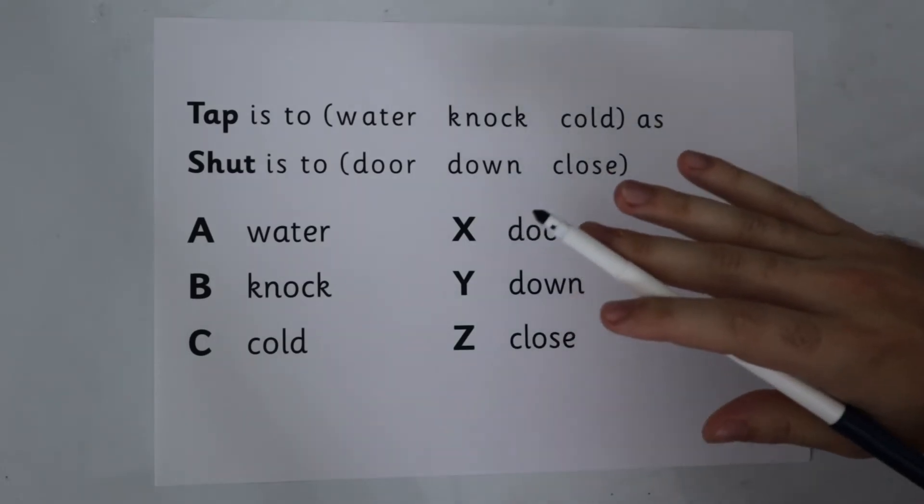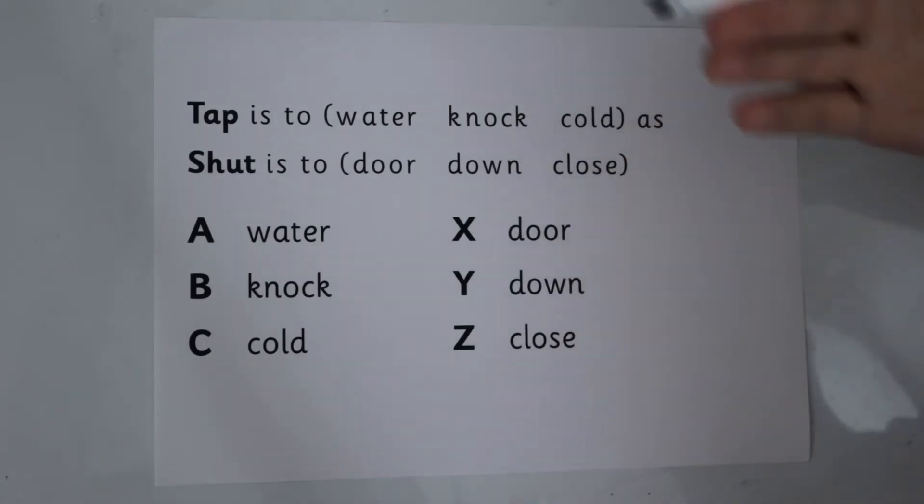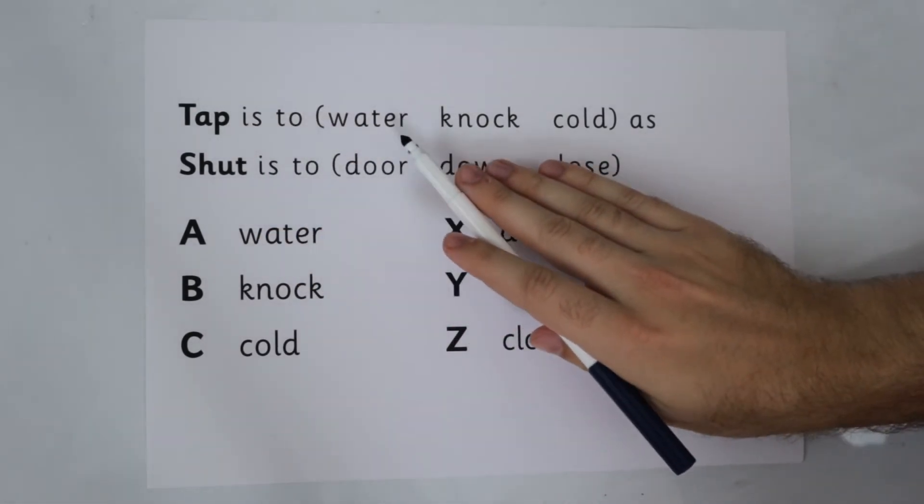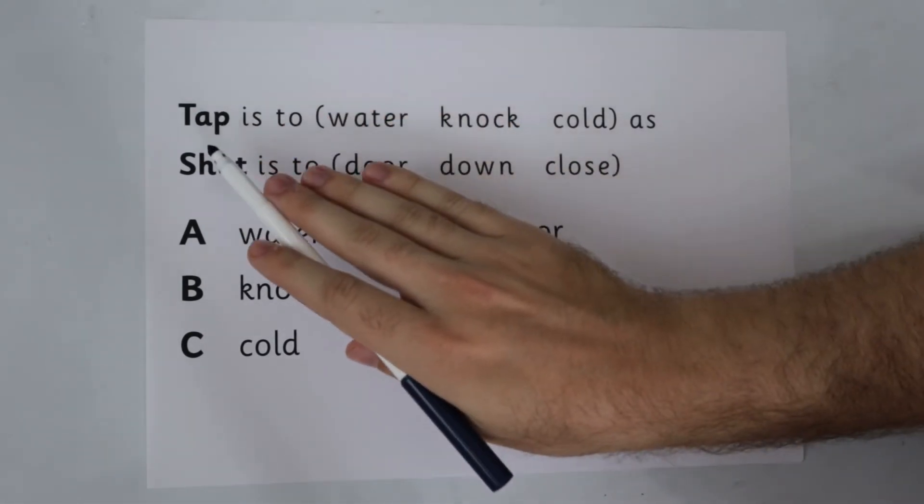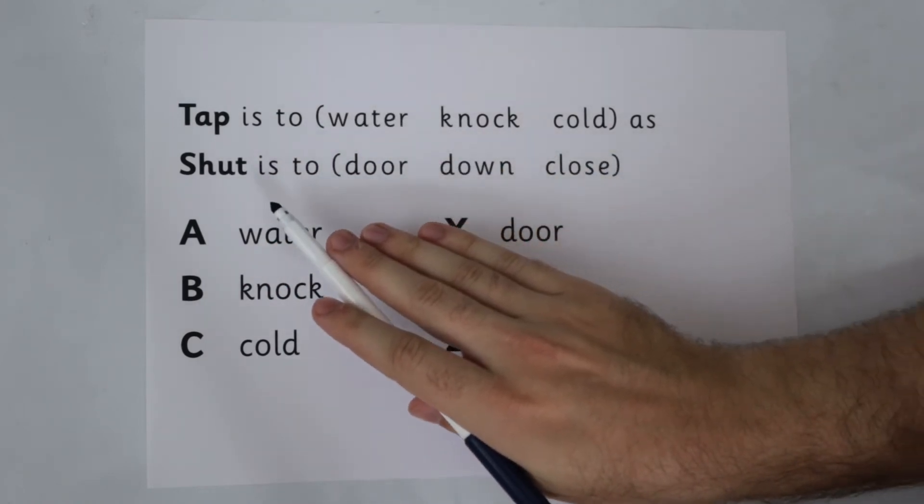Let's have a look at the second question now we've had a look at the technique to solve these accurately. Tap is to water, well let's build up the relationship. Water comes out of a tap, so let's have a look at the bottom, working systematically.